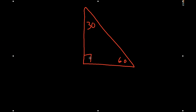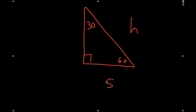Opposite the right angle, we'll call the hypotenuse. And then we have the short leg, which we'll refer to with the letter S. And then we have the long leg, which we'll use the letter L.